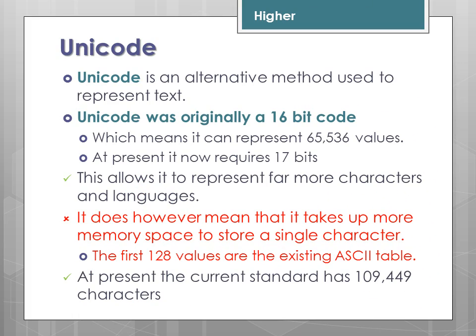Unicode is an alternative method used to represent text. Unicode was originally a 16-bit code. Due to the fact that it is always being revised, it can originally represent 65,536 values. At present, it is approximately 17 bits, which does allow it to represent far more characters and languages. However, it does mean that it takes up more memory space to store a single character.